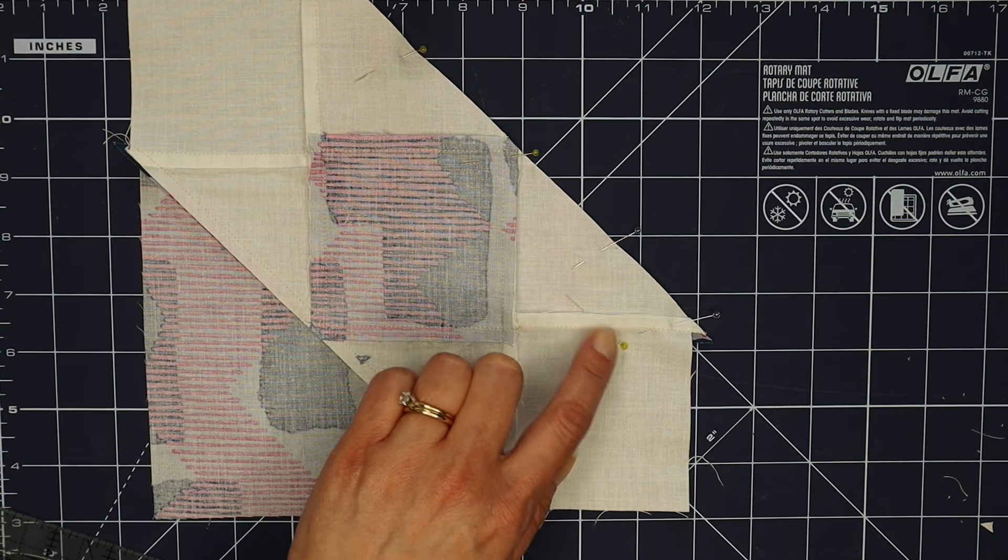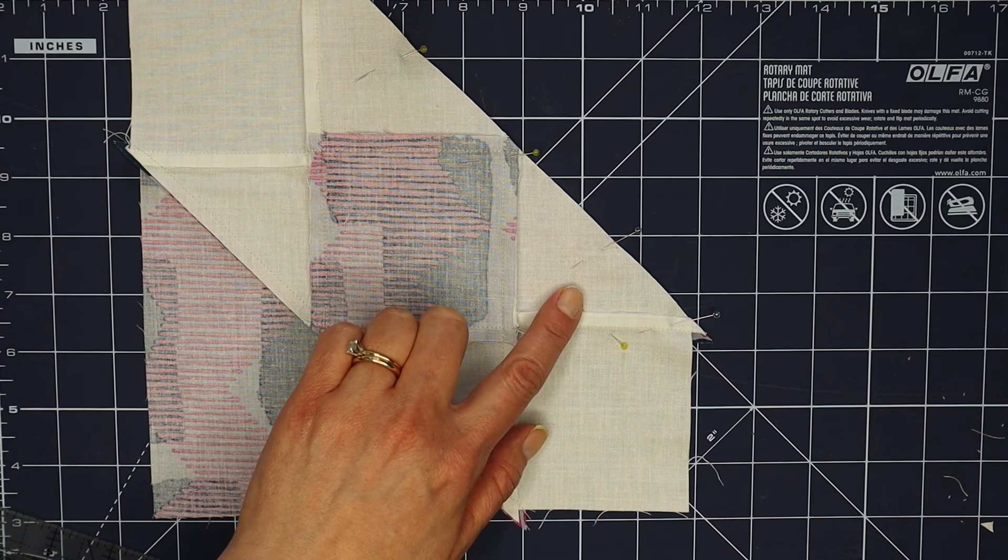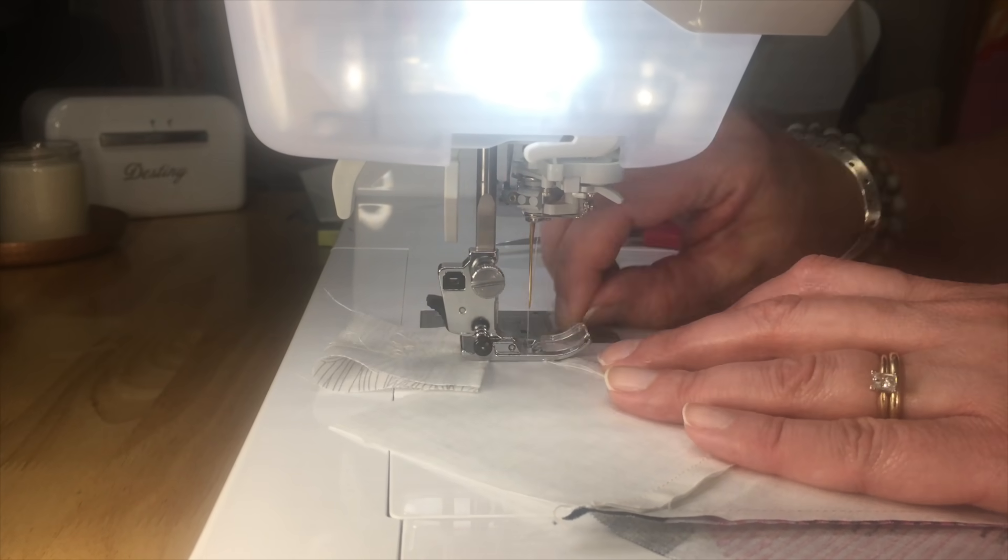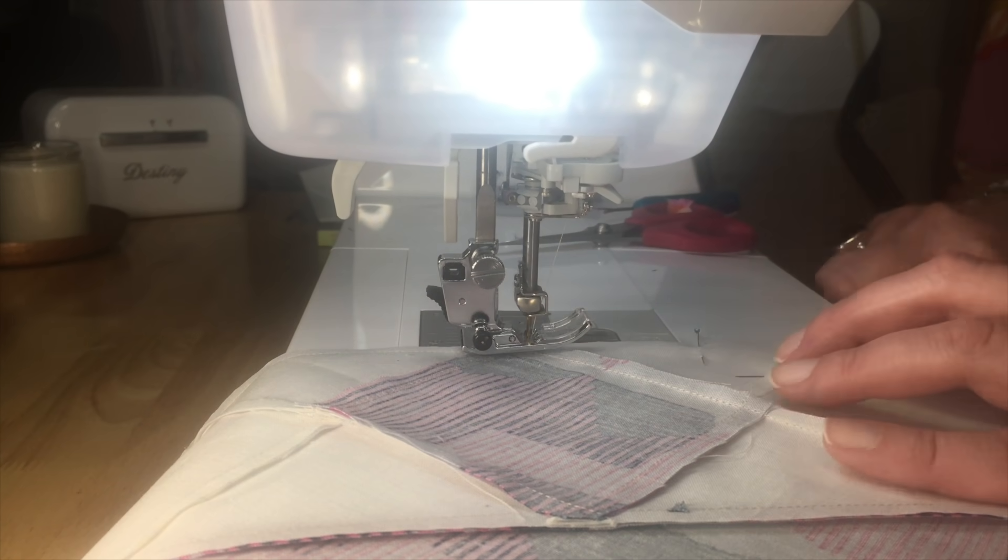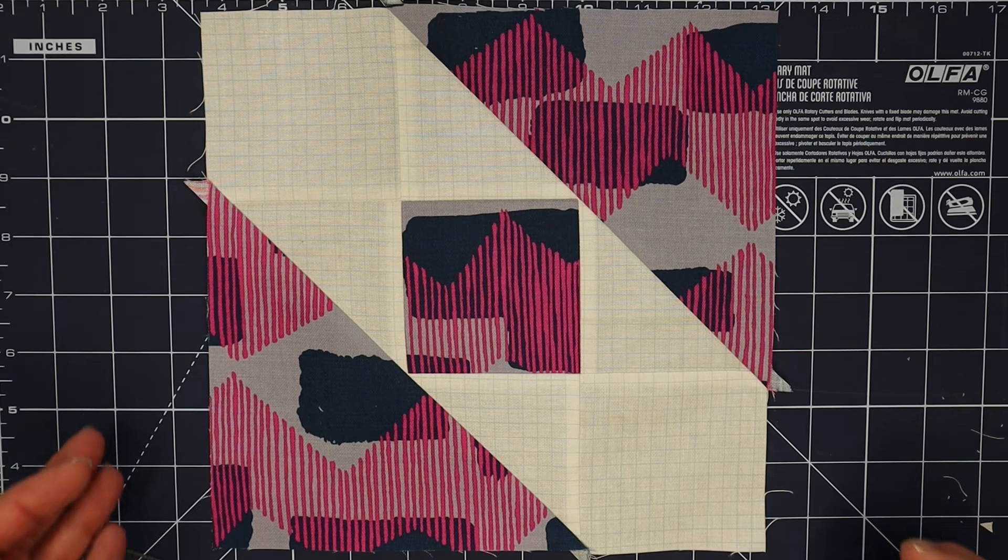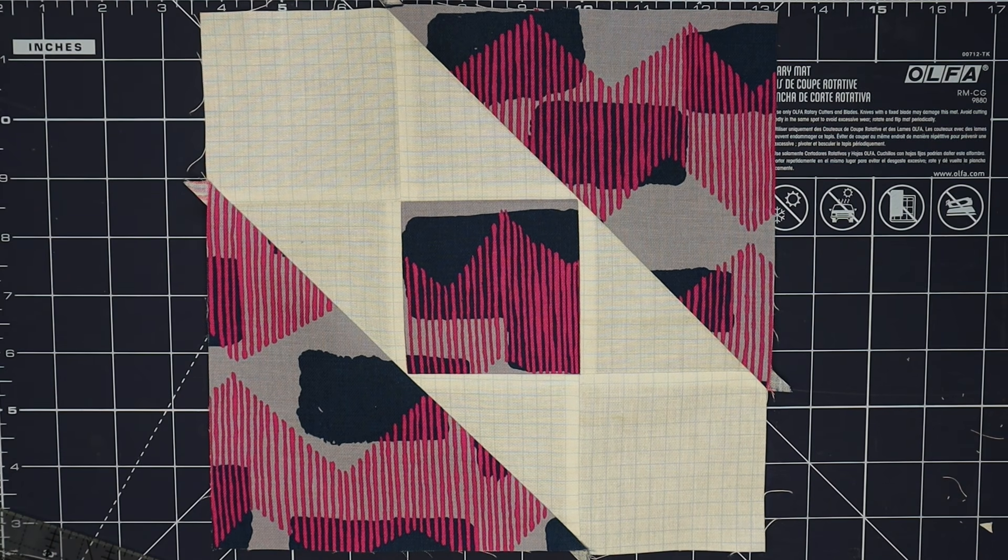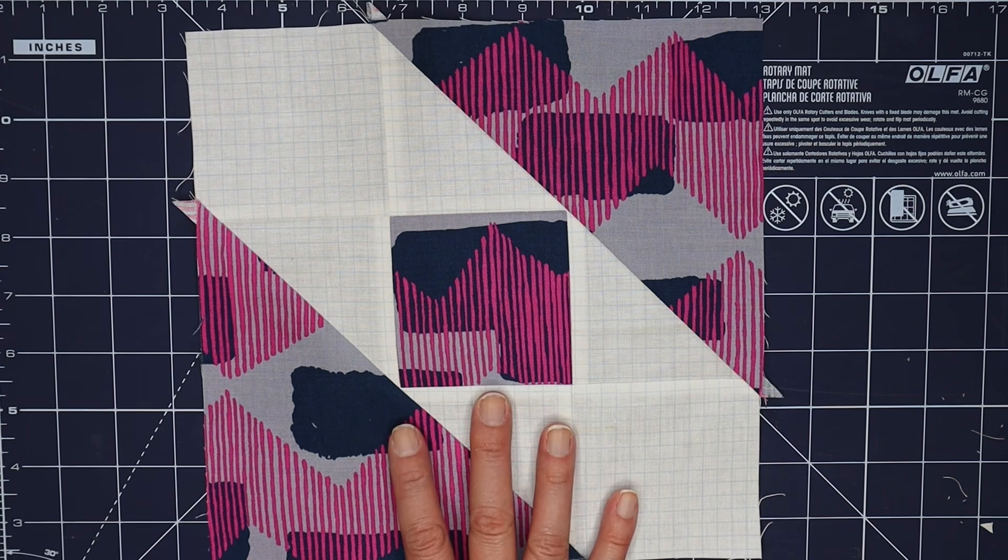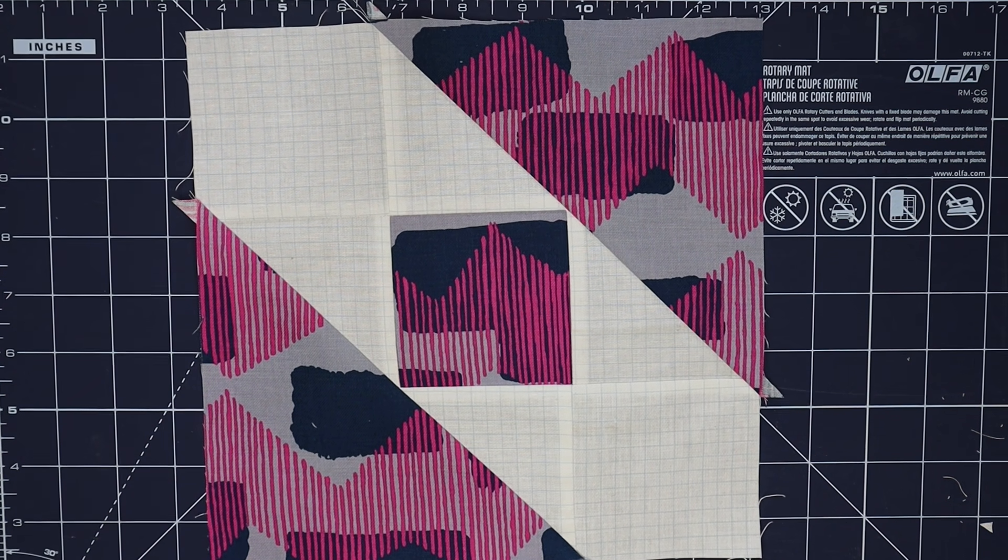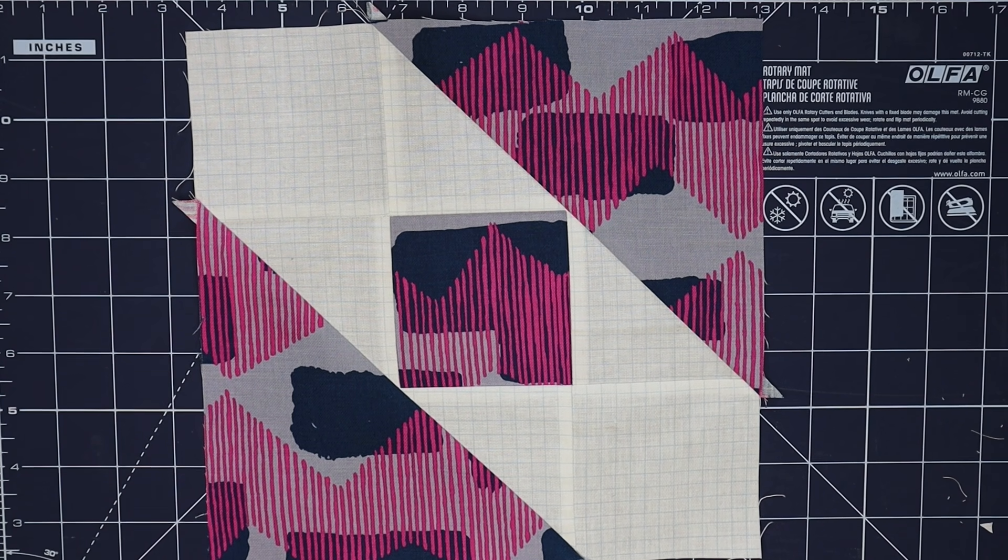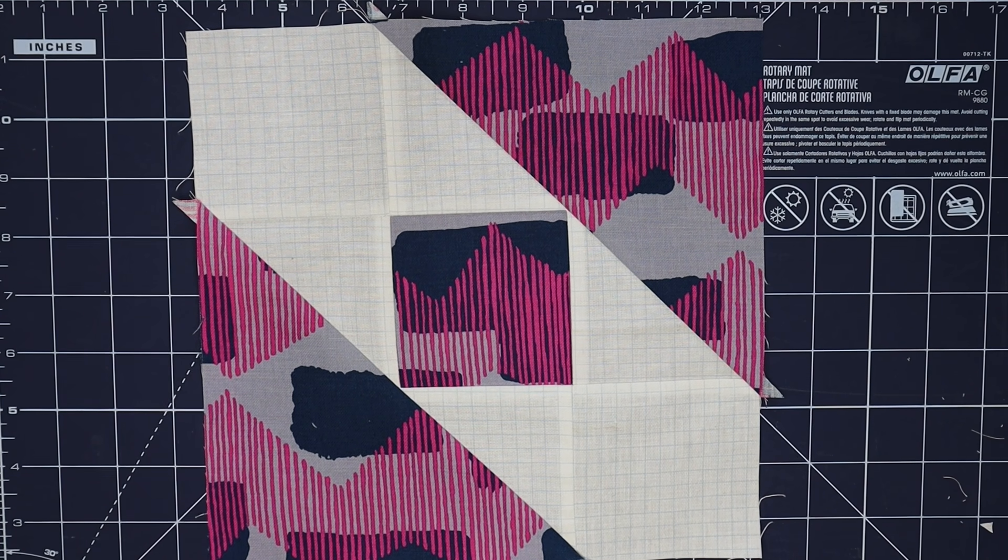Here I've added one more pin to keep my edges lined up. All right, so there's floating and the only last thing you may need to do is trim your block to nine and a half inches square. There are a lot of angles in this block but I think it's a lot of fun to experiment and try, and you'll see in some of the layout options that there's fun things that you can do with color placement as well.